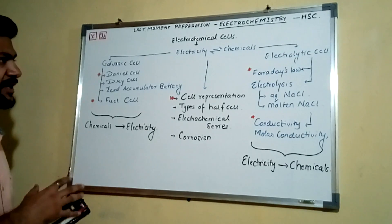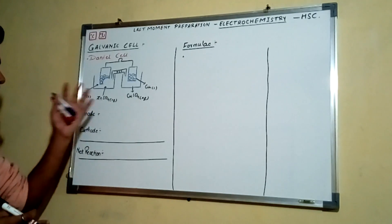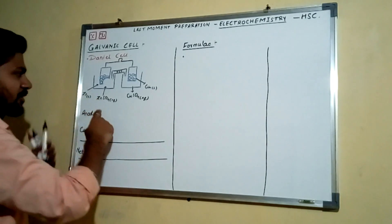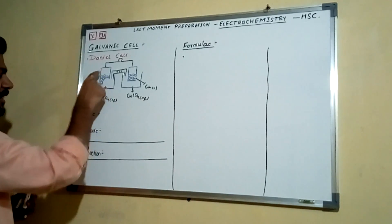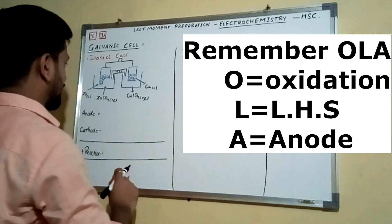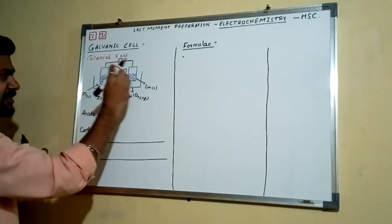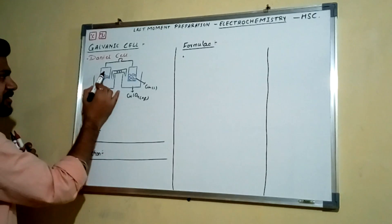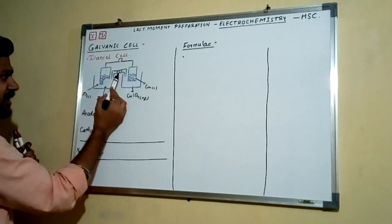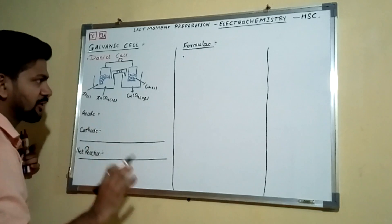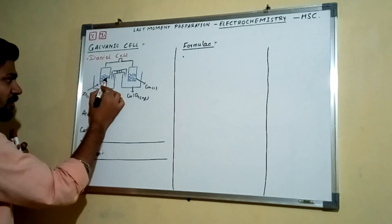Let's start with the galvanic cell. On the board you see a Daniel cell with two containers — left and right. Always remember: the left-hand side container has oxidation, and the right-hand side has reduction. This Daniel cell produces electricity from chemicals. You have a zinc rod in zinc sulfate solution and a copper rod in copper sulfate solution. These two cells are connected by a salt bridge. Remember the functions of the salt bridge — it's a very important board exam question.